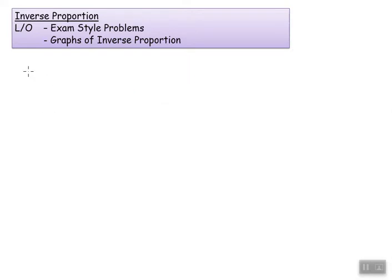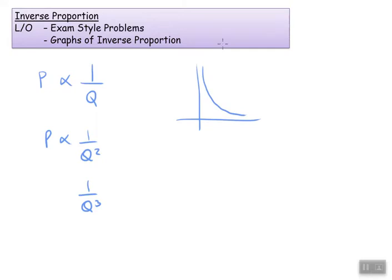So to summarize, any kind of inverse proportions, 1 over Q, or 1 over Q squared, or 1 over Q cubed, would look something like that. It could be kind of like up there, or kind of like, but it looks something like that.